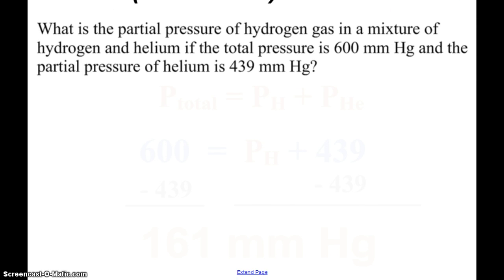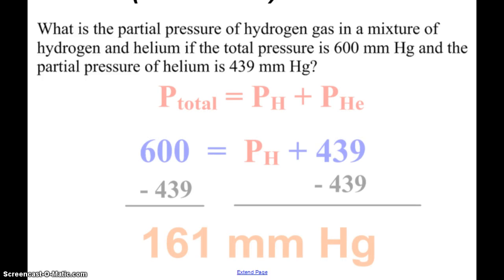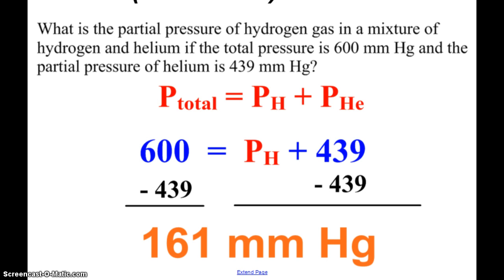Same thing here, just kind of drawn out, but if you've got hydrogen mixed with helium, total pressure is 600 millimeters of mercury, the partial pressure of helium is 439. So again, we can see that we can derive how much of the pressure is coming from the hydrogen gas in the mixture.